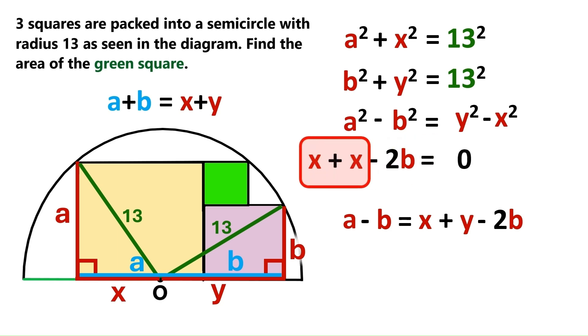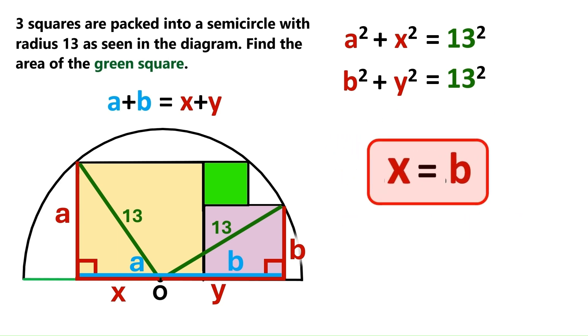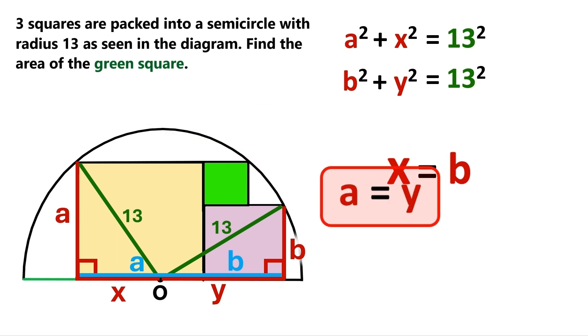And these two add up to 2x. Now let's take this minus 2b to the other side, where it becomes plus 2b. And we can conclude that x equals b, which takes us to the next conclusion, that a equals y. Let's keep these findings here.